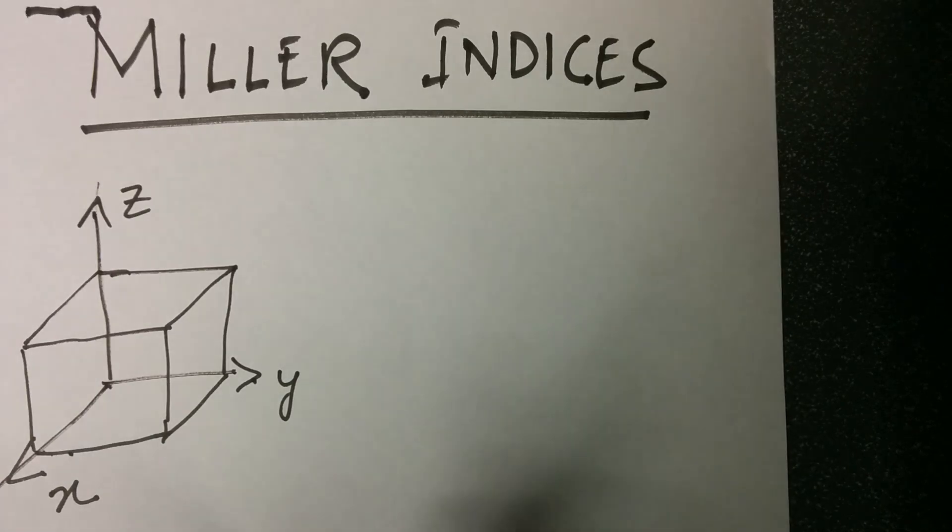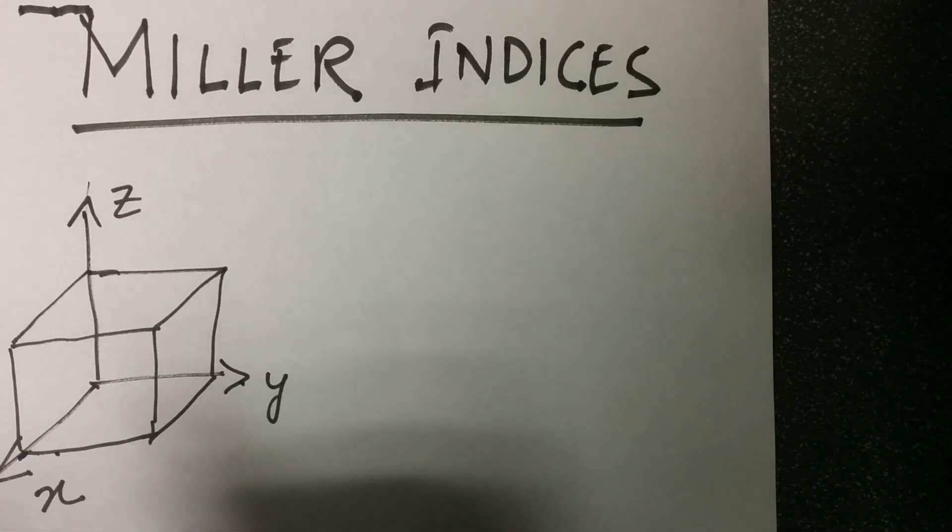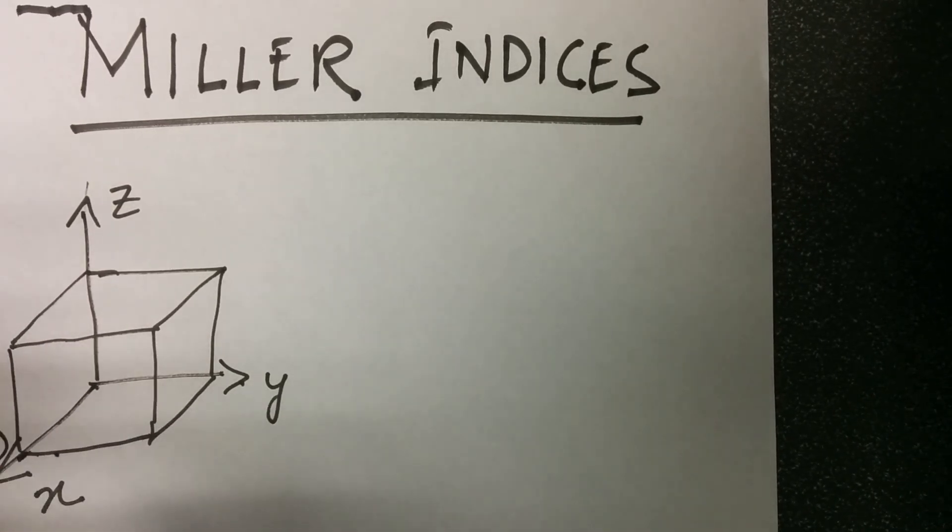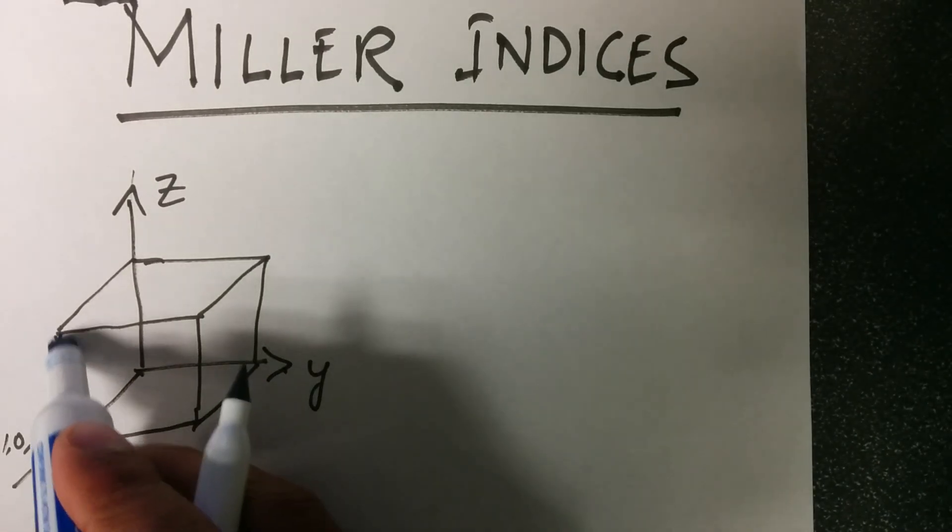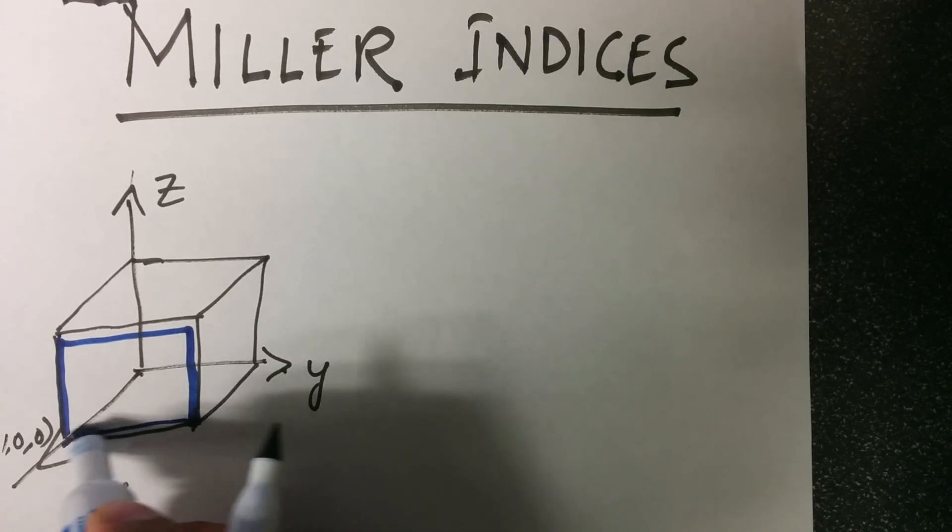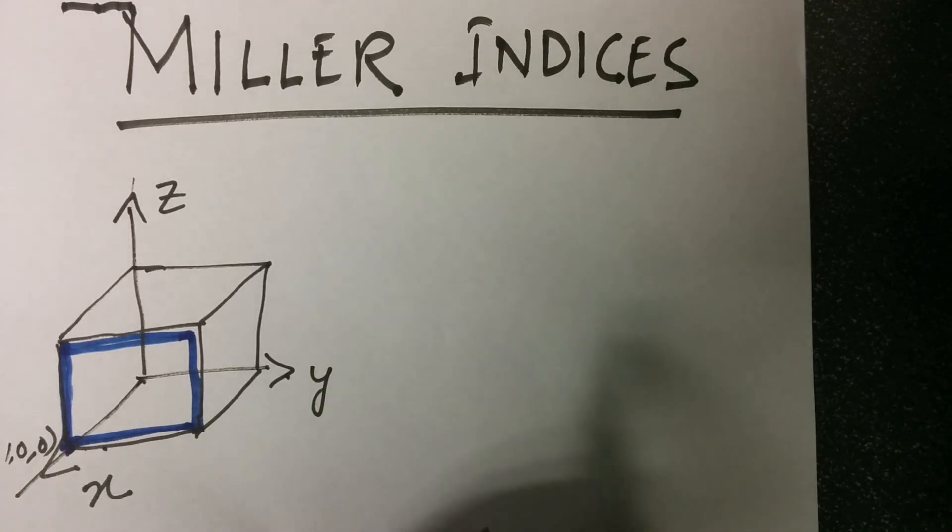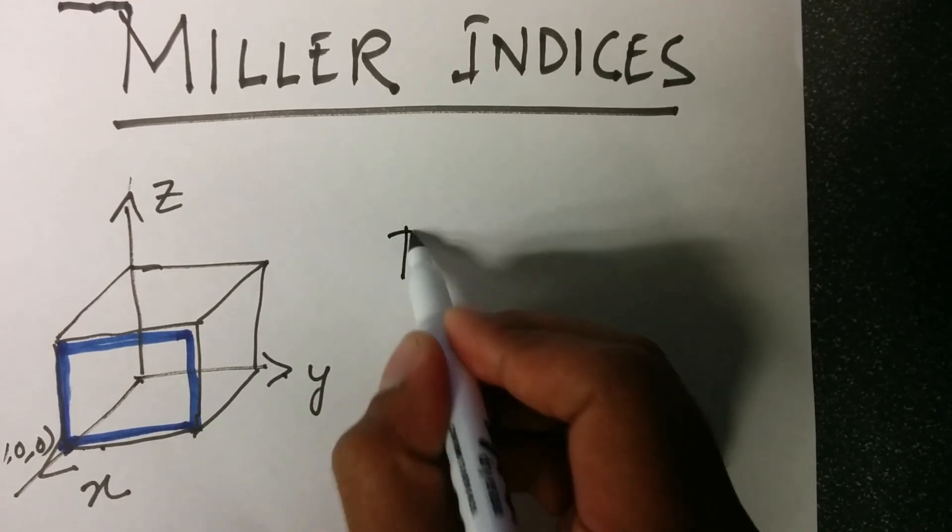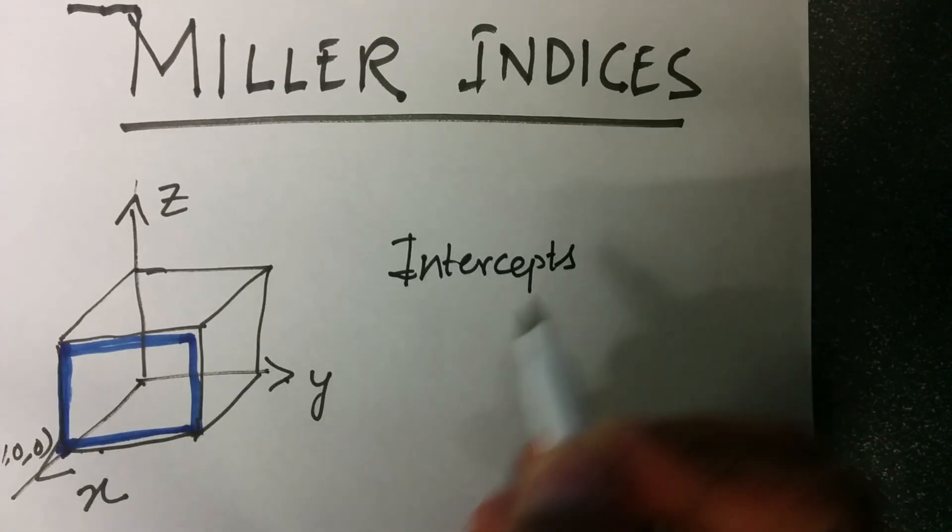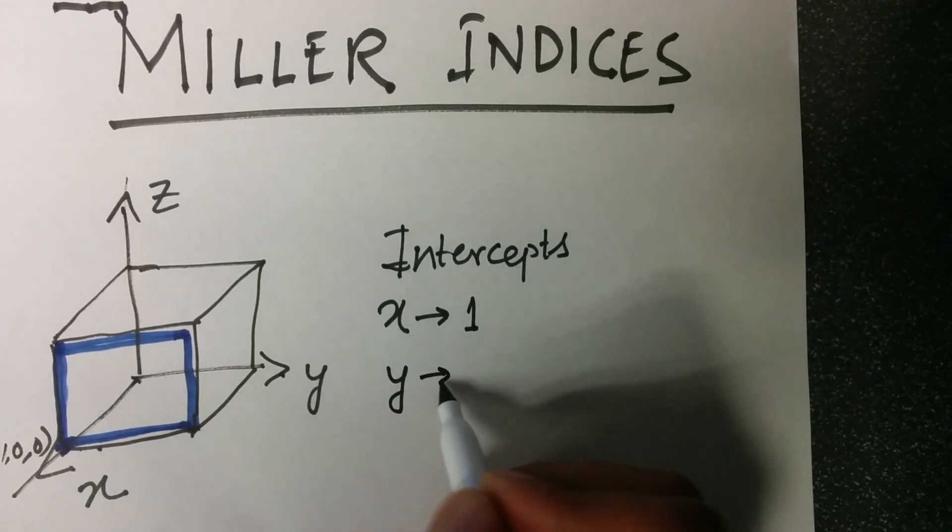Now let's define a plane which intersects the x-axis at this point (1, 0, 0). The plane could be defined as something like by this blue color. We find the intercept made by this plane on x-axis to be 1, on y-axis to be infinity.